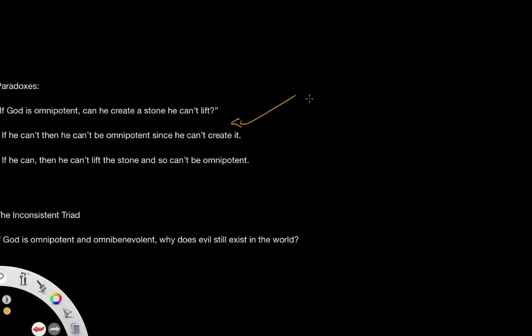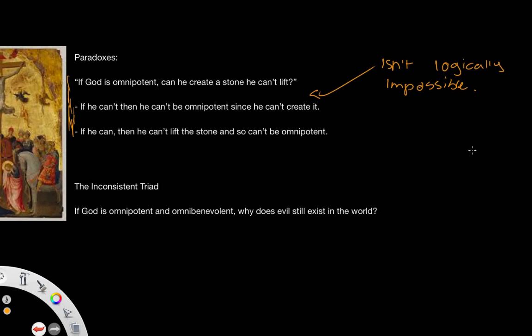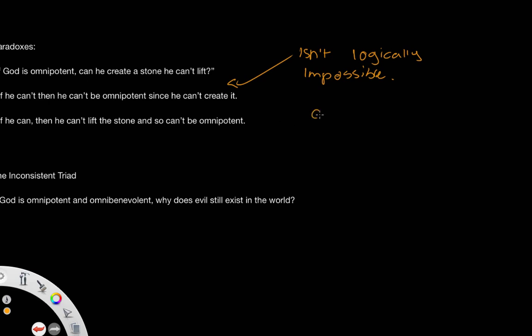And it also is something that isn't logically impossible. Because a number of Christian thinkers and general philosophers in history have said that God is all powerful - he can do anything that's possible, but only things that are logically possible. Something that's logically impossible is something he can't do. So for example, if I was to ask the question: Can God create a square circle? Well, this is something that's logically impossible.